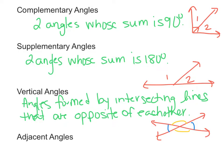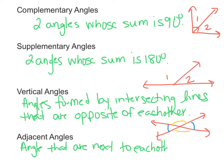Adjacent angles are angles that are next to each other and they share a vertex. So adjacent angles would be like if you have this picture here — angle 1 and angle 2 share this vertex and are right next to each other. So those are adjacent angles.